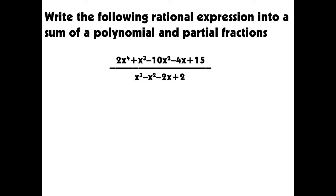Now, let's write the following rational expression as a sum of a polynomial and partial fractions: the quantity 2x raised to 4, plus x cubed, minus 10x squared, minus 4x, plus 15, over the quantity x cubed, minus x squared, minus 2x, plus 2.